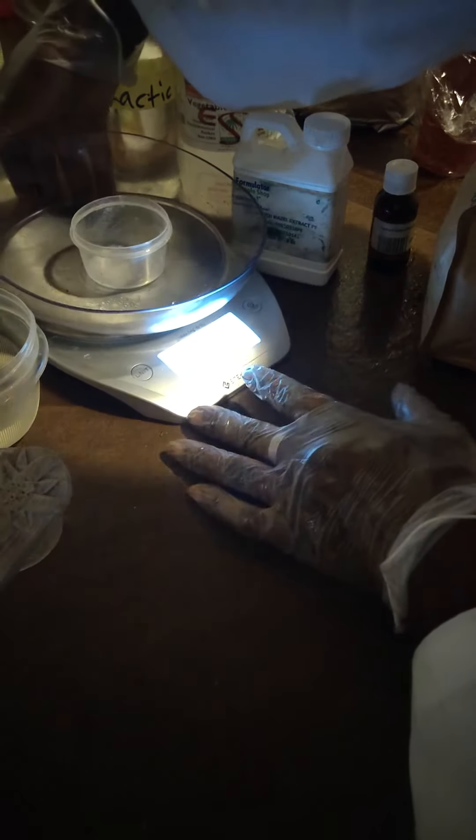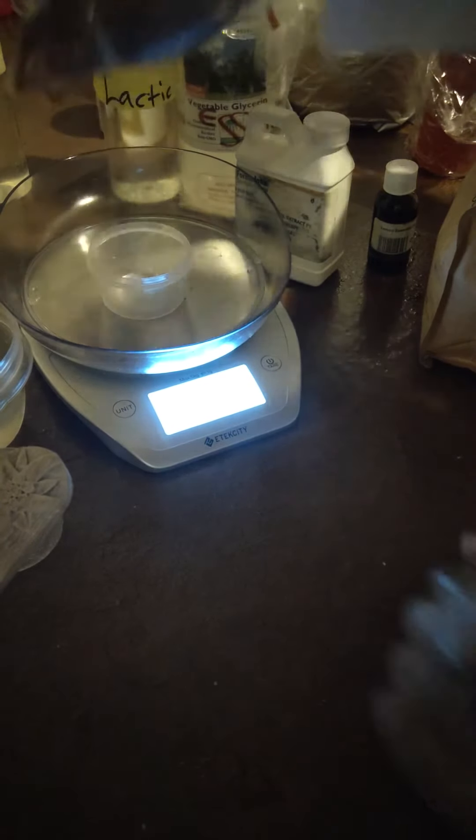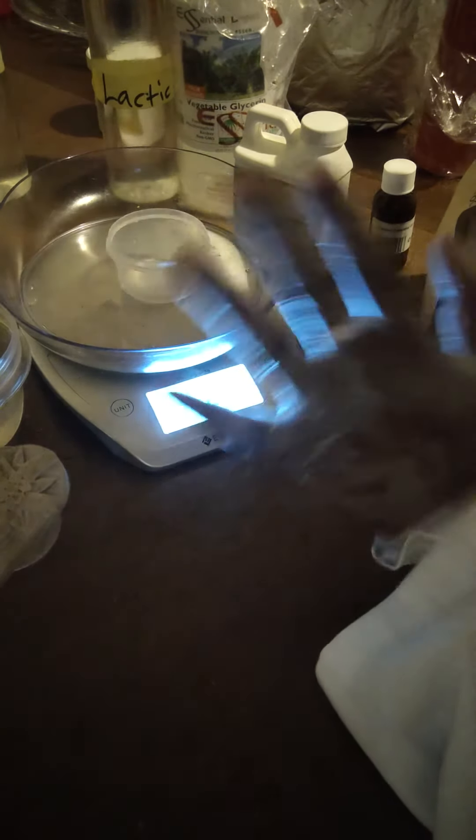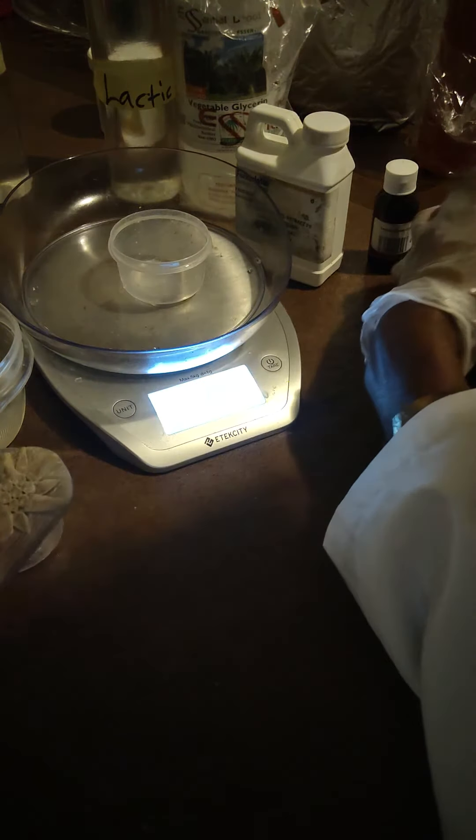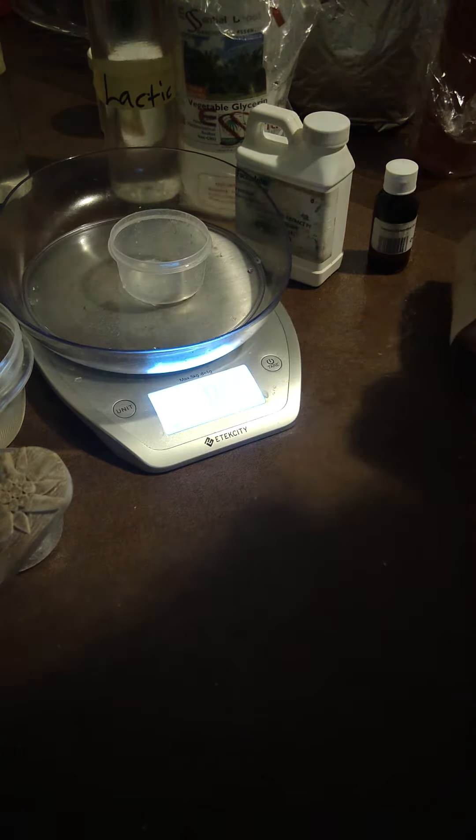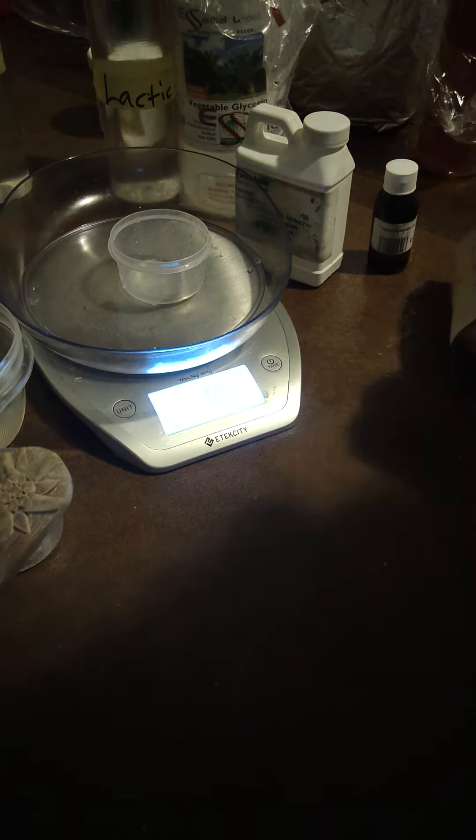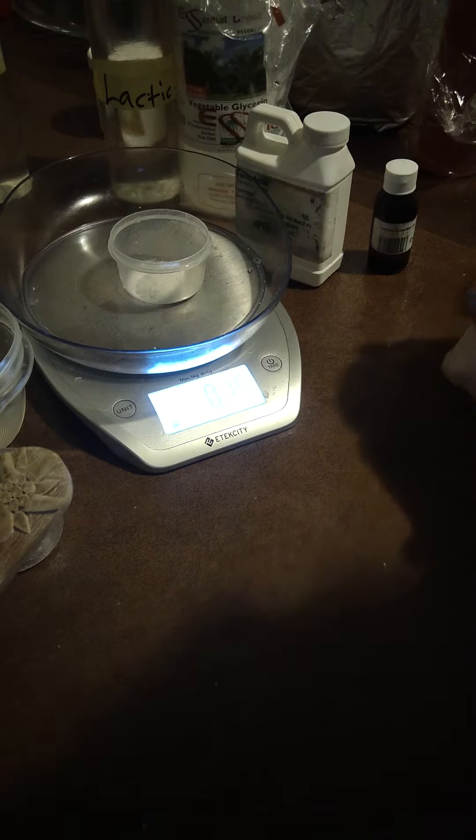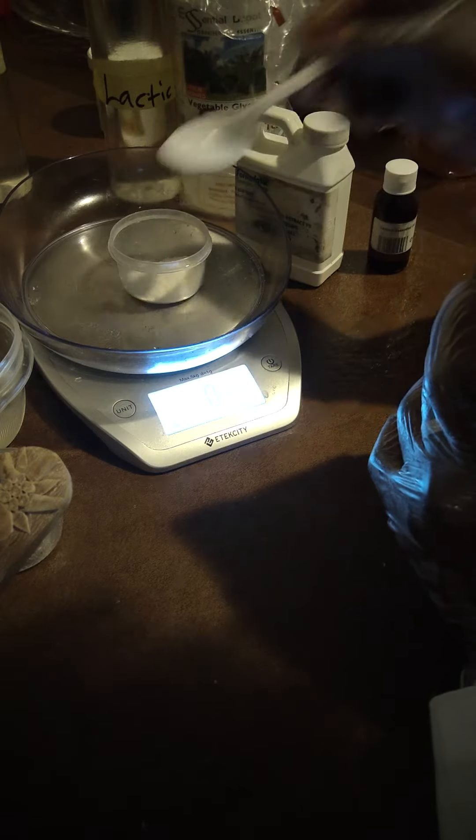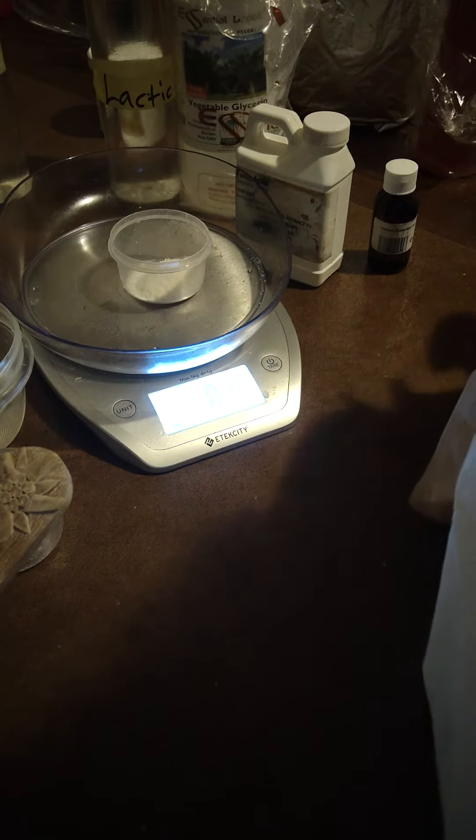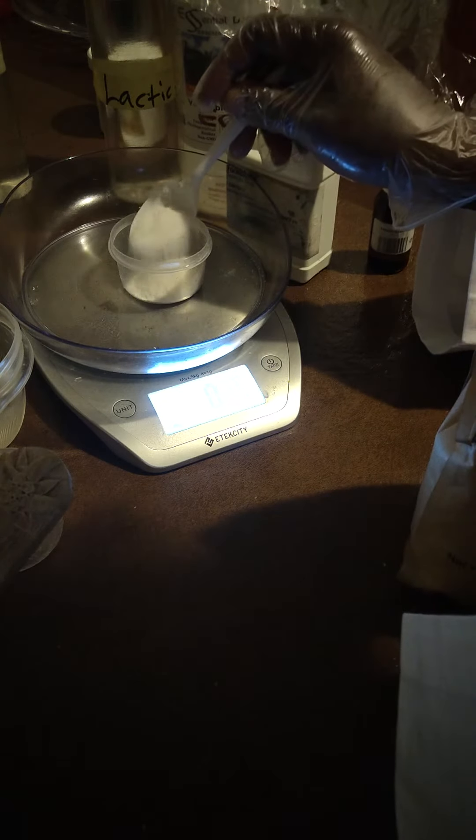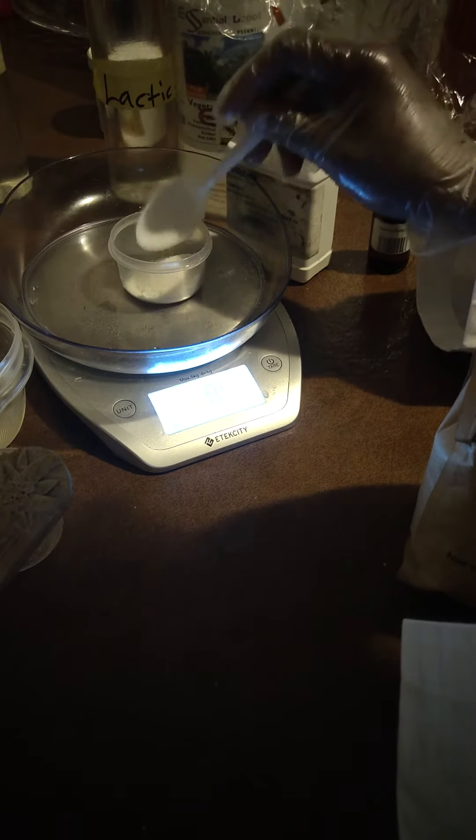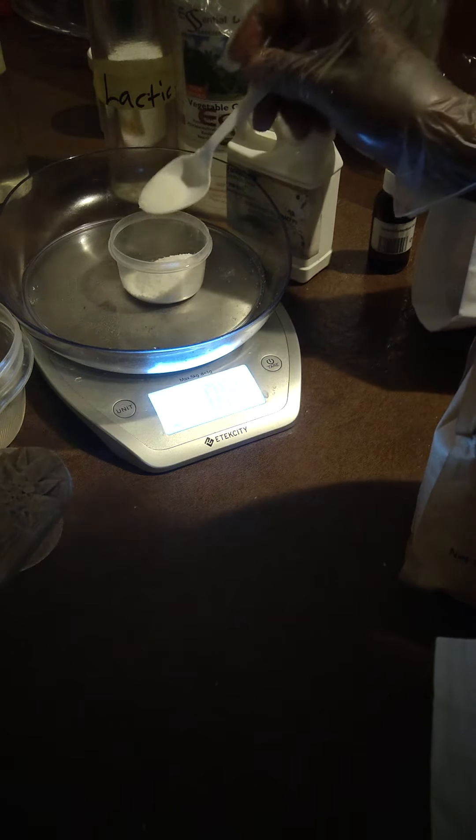First you have to zero the scale or tare it - T-E-R-E. Once you put the container on, you press tare and it resets the scale to zero. Now we're at zero even though there's an object on the scale. I'm adding malic acid - it's 10% of my final six ounces, so it should be 0.6 solid ounces. I need about 0.06 more to reach 0.6.